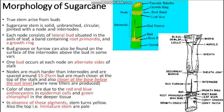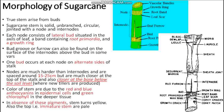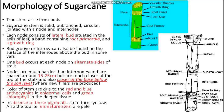The bud is situated in the axil of the leaf band, consisting of the bud primordium and the growing ring. A bird groove or furrow can also be found on the surface of an internode above the bud in some varieties. Internode length is typically 15 to 25 cm. Nodes are much closer at the top of the stalk and at the base below the soil level.